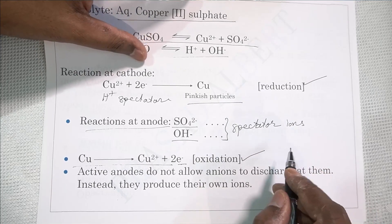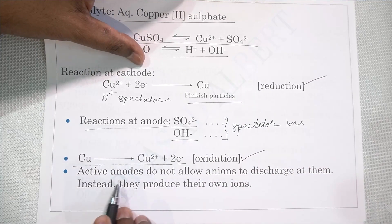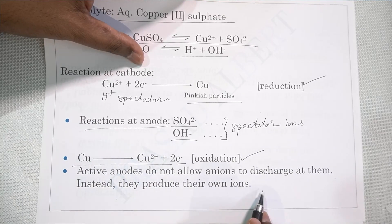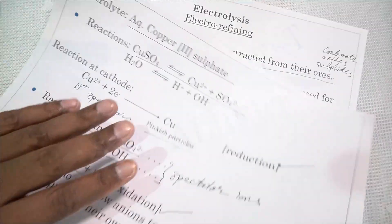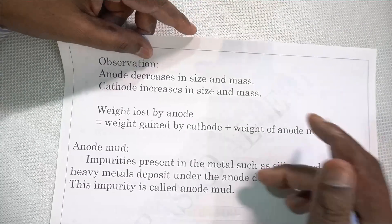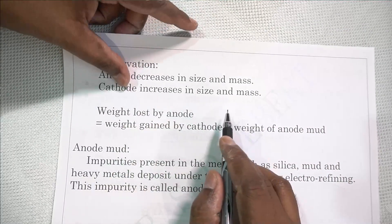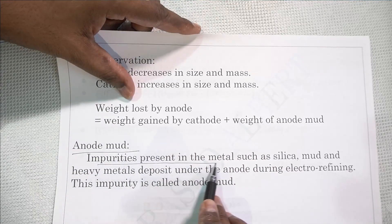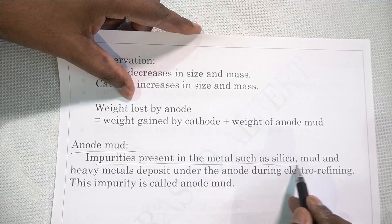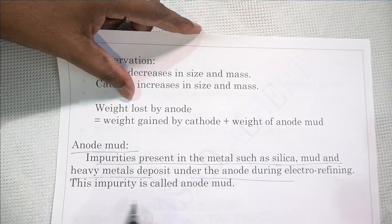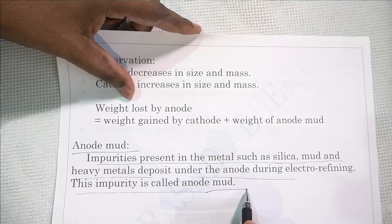Now, what happens to the impurities? Active anodes do not allow anions to discharge at them; instead they produce their own ions. The impurities settle under the anode — this is called anode mud. Anode mud is the impurities present in the metal, such as silica, mud, and heavy metals, which deposit under the anode during electrorefining.